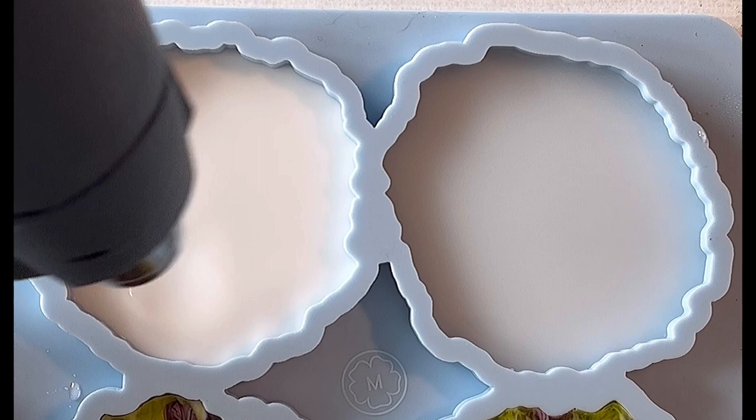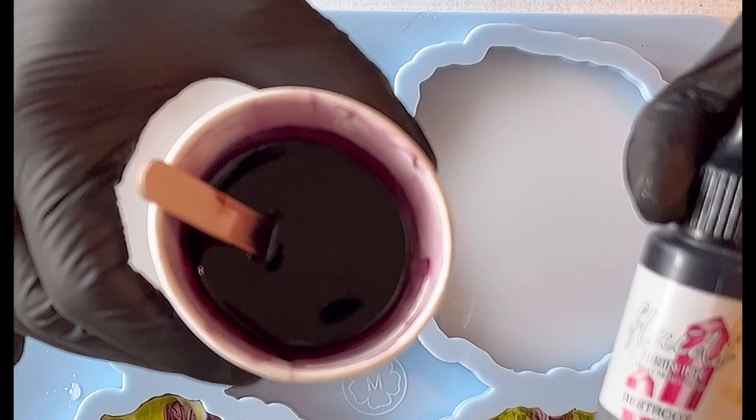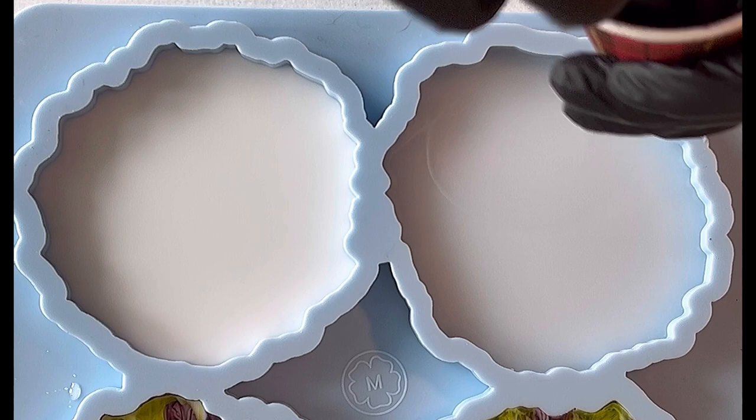Now I'm giving it just a tiny torch to pop any bubbles and then I start with my colors. I'm using resin inks this time, only resin inks, and the first color is the red bead. I'm using the same colors, exactly the same colors, for all the two coasters.